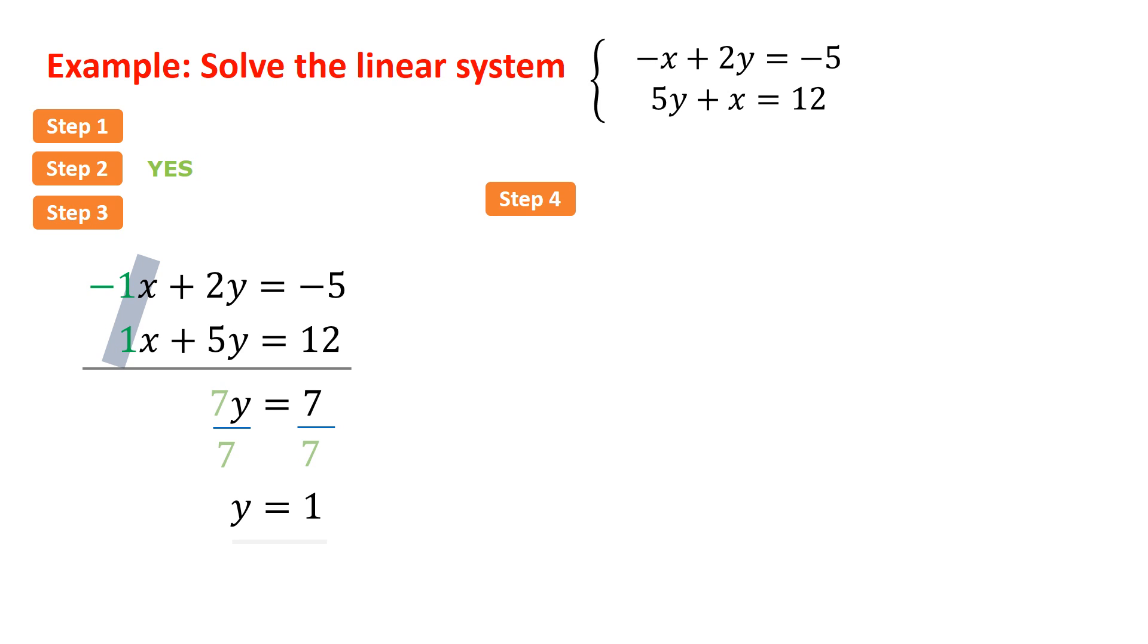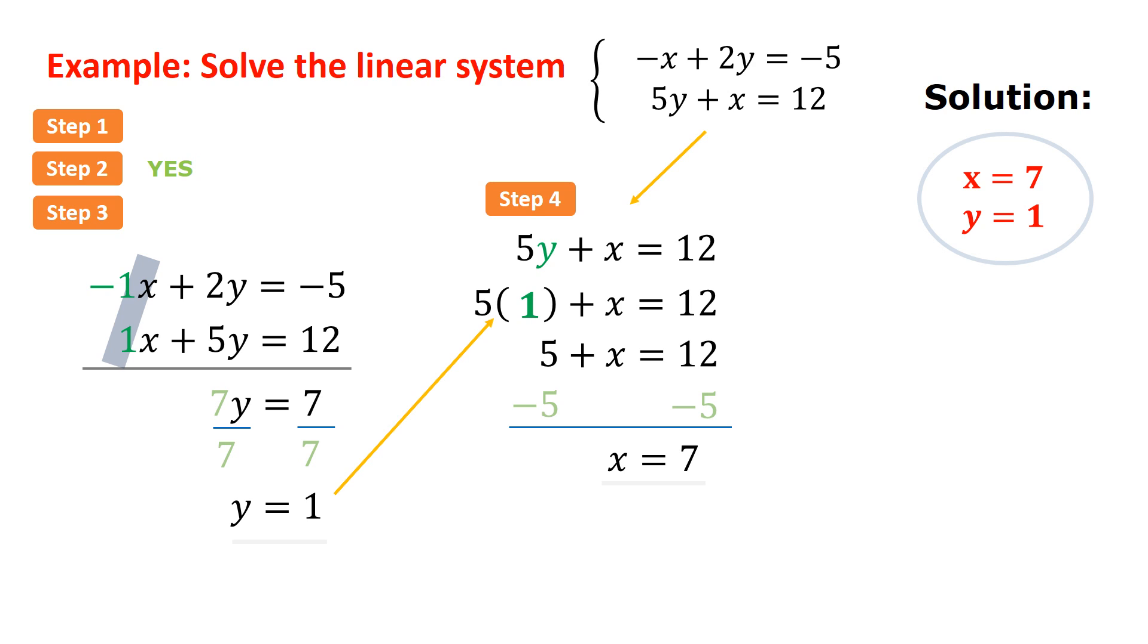Moving on to step 4. We're going to substitute that 1 into one of the equations. The second equation seems a little bit easier because there are less negatives there to deal with. And when you substitute, use the equation exactly the same way it was written the first time. We use parentheses to substitute 1. And we solve for x by subtracting 5 on each side and we get x equals 7. Our solution is x equals 7, y equals 1. It could also be written that way.